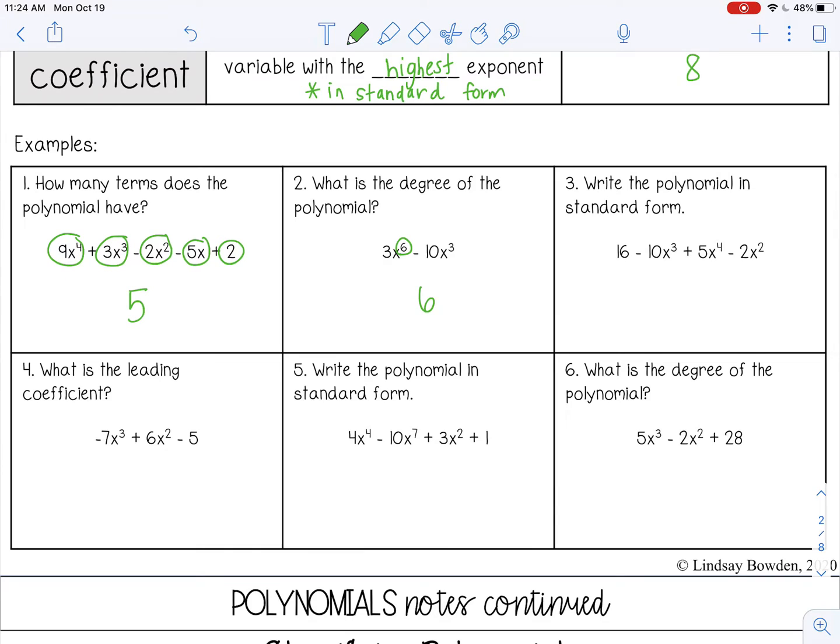Number 3, write the polynomial in standard form. So remember, we want to go from largest exponent to smallest exponent. And whatever sign is in front of that term stays with that term.